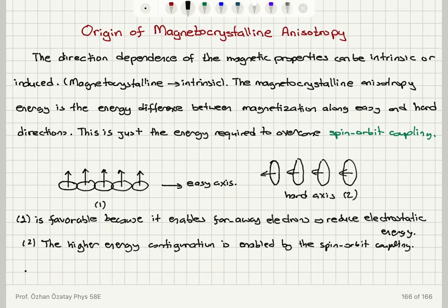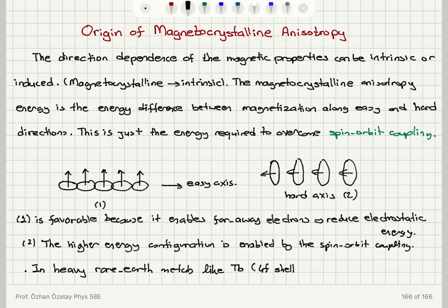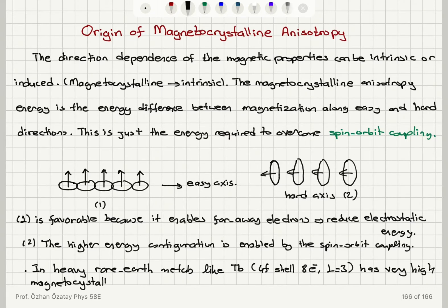Do we have any evidence for this relationship between spin-orbit coupling and anisotropy? The answer is yes. If you look at heavy rare earth metals, for example terbium: terbium has 4F shell electrons — 8 electrons — and has orbital angular momentum quantum number L equals 3. This material has very high magnetocrystalline anisotropy.